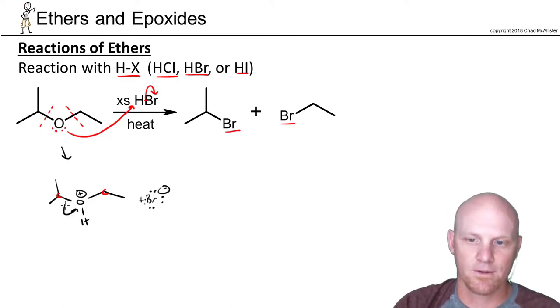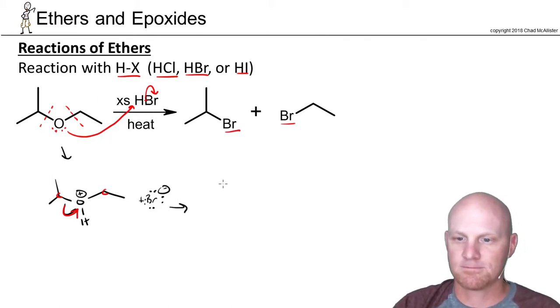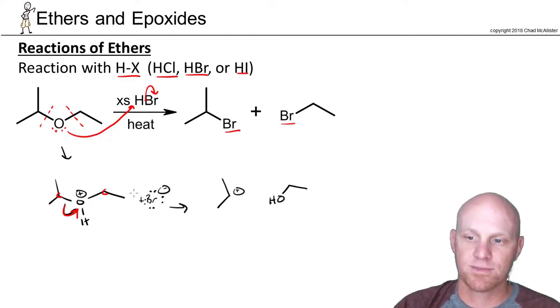So from there we'll have a secondary carbocation. We'll also have our alcohol and from there the carbocation potentially has a chance to rearrange. This one won't. And then bromide is going to come in and attack and that's going to get us this product right here.